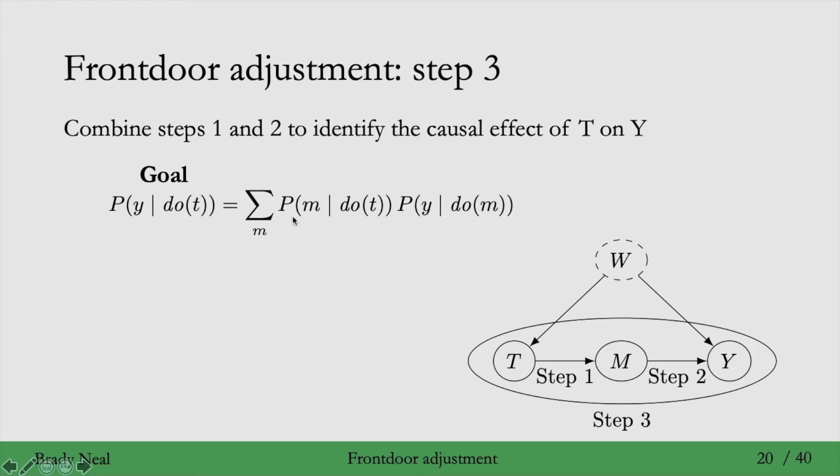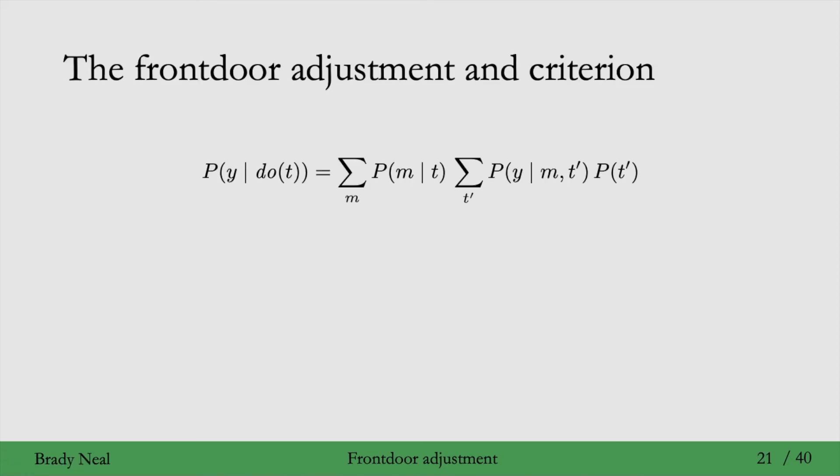And then because this distribution of M given do T is a distribution, we have to sum over all values that it can take on to sum out that randomness. And then we actually know what each of these quantities inside this sum is equal to when we get rid of the do operators from steps one and step two. We have a T prime on the inner sum here to distinguish it from this T, which matches this T here. So that's the only reason we have T prime here. And that's actually the front door adjustment.